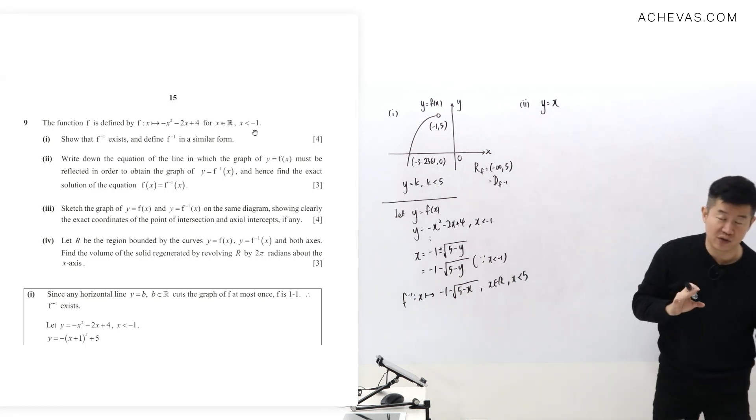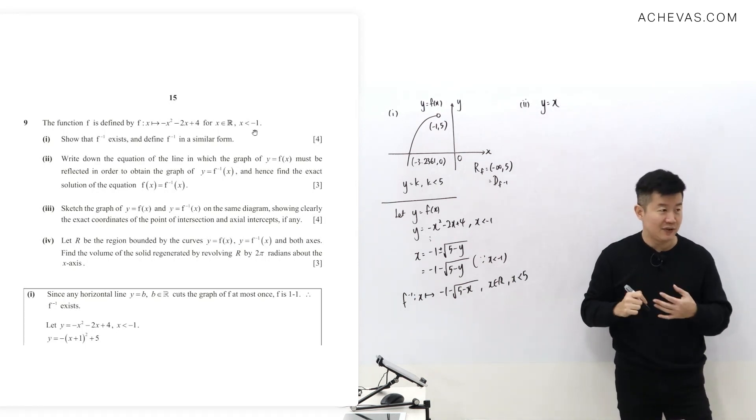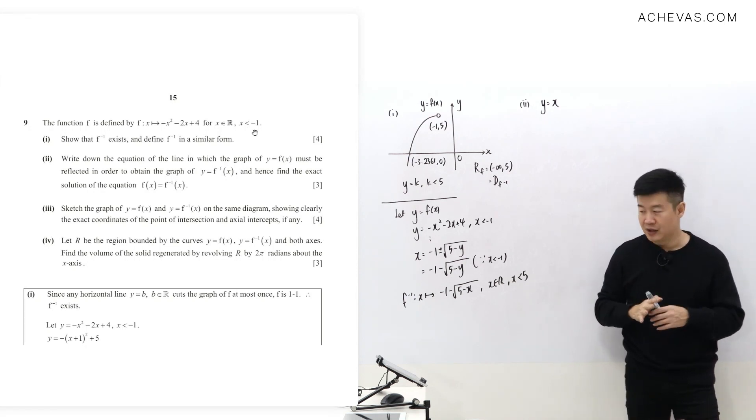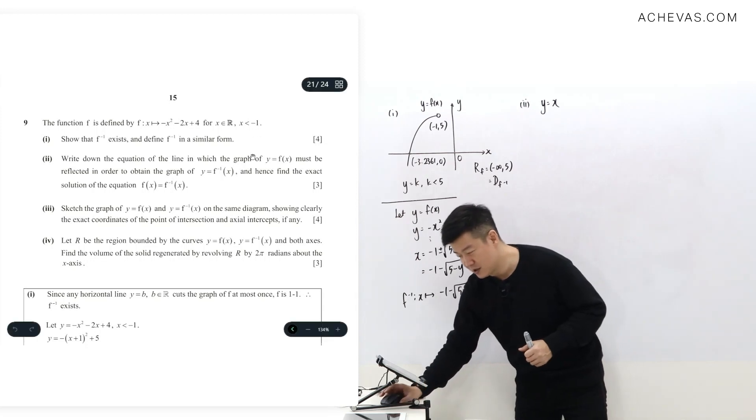So what is that line? The line is y equals x. I think this question is not very well set, because I have told you before, usually when you see this kind where they say hence find f(x) equals f inverse (x).